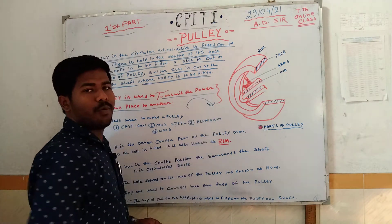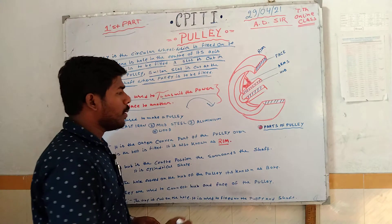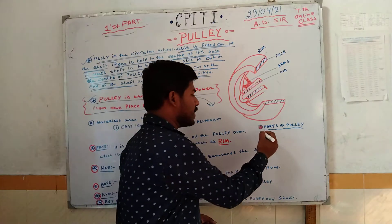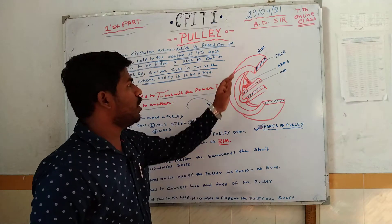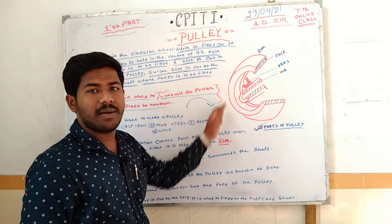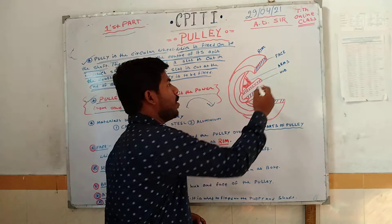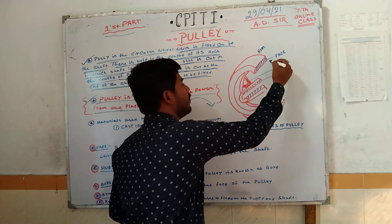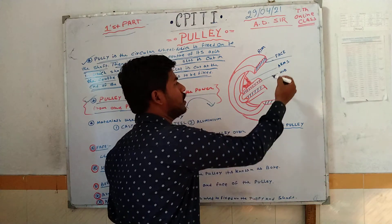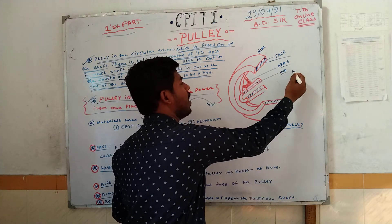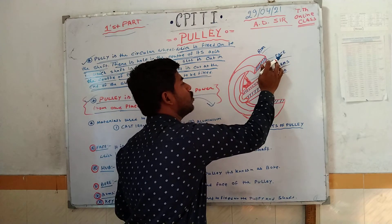The pulley is used to transmit the power from one place to another place — from one place to another active place. So the power spreads from one place to another place.